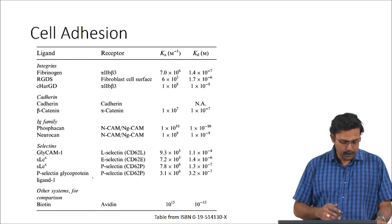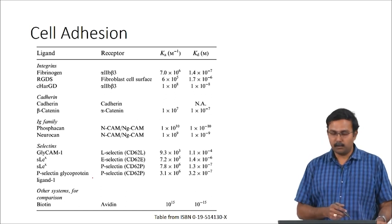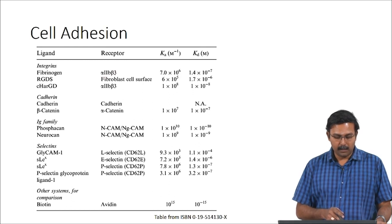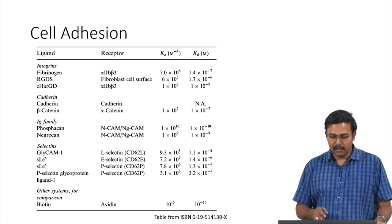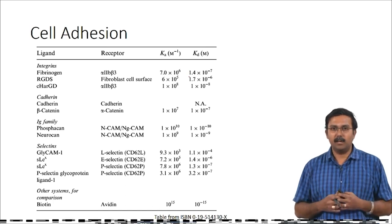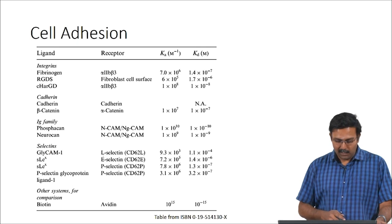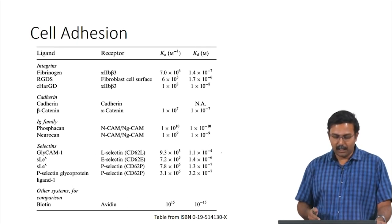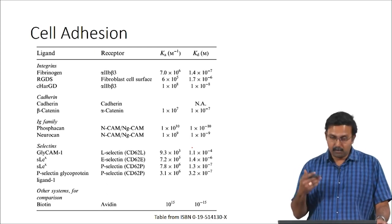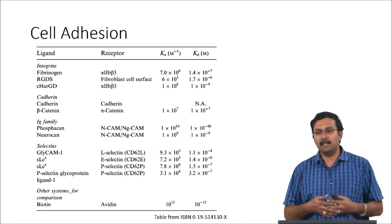These complexes are classified based on the type of junctions or adhesions. For integrins, fibrinogen interacting with alpha-2b-beta-3 receptor has a dissociation constant that is really small, showing a significantly strong interaction. Whereas for selectins — glycam-1 and L-selectin — the dissociation constant is not that small; it is orders of magnitude higher, indicating that it is much weaker. There are other interactions as close in strength to covalent bonds, like the biotin-avidin complex, with a dissociation constant of about 10⁻¹⁵.